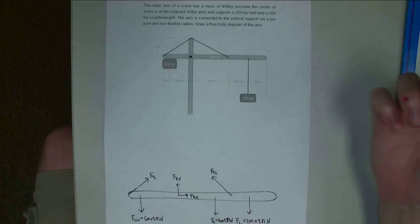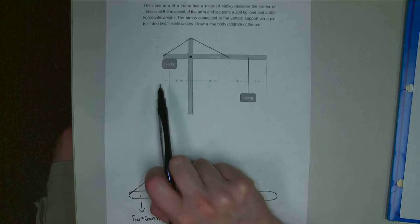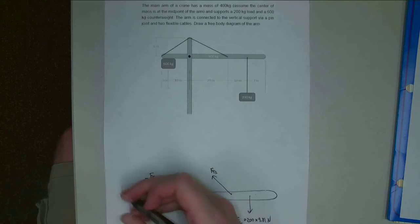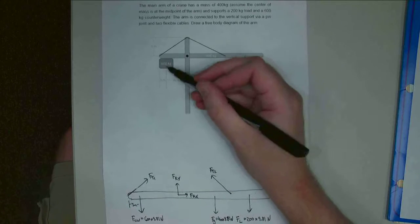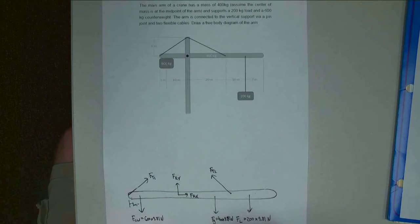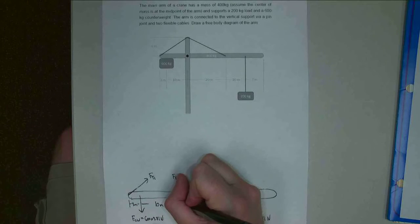So now I need to start considering dimensions and angles that are important to this. Alright, so going from the end of the arm, where this tension force is, over to the center of the counterweight, that's going to be three meters. Going from the center of the counterweight to the pin joint, that's another ten meters.